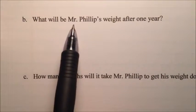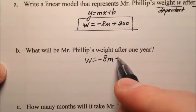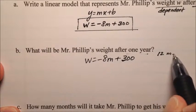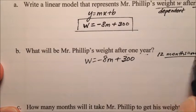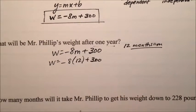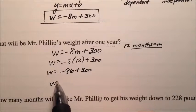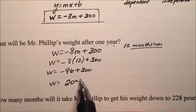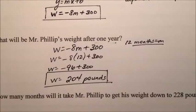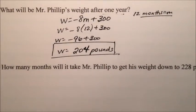Part B asks, what will be Mr. Phillip's weight after one year? So we can write this model down, negative 8M plus 300. And we want to know his weight after one year. Well, one year is 12 months, right? So 12 months equals our M. So we can put 12 right in there for M. So the weight equals negative 8 times 12 plus 300. Well, negative 8 times 12 is negative 96 plus 300. So it looks like our weight will be 204 pounds. Looks like he's going to lose almost 100 pounds that first year, which that would be pretty significant. He'd be like a whole different person. So you go, Mr. Phillips.